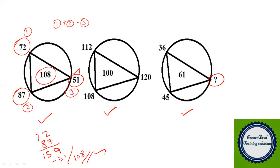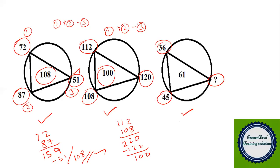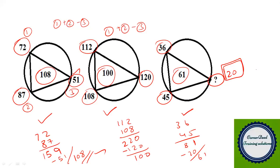Now decode the second figure with the same structure: 112 + 108 = 220, then 220 − 120 = 100, which is the middle number. This structure works perfectly for the second figure. So apply the same code to the third figure: 36 + 45 = 81. Then 81 minus what gives 61? 81 − 20 = 61. So the question mark is 20.